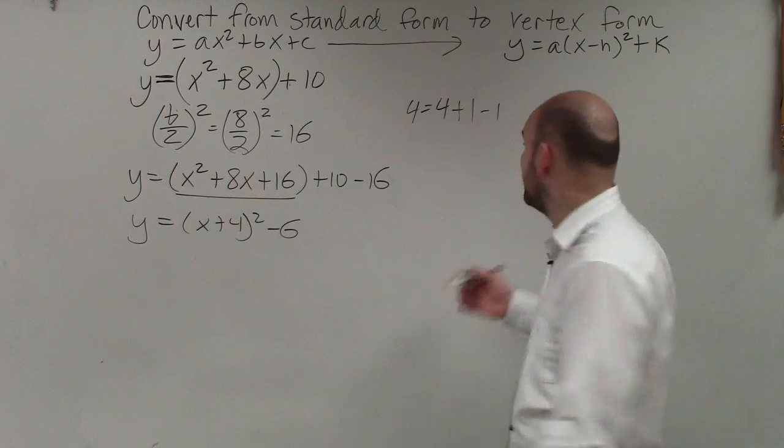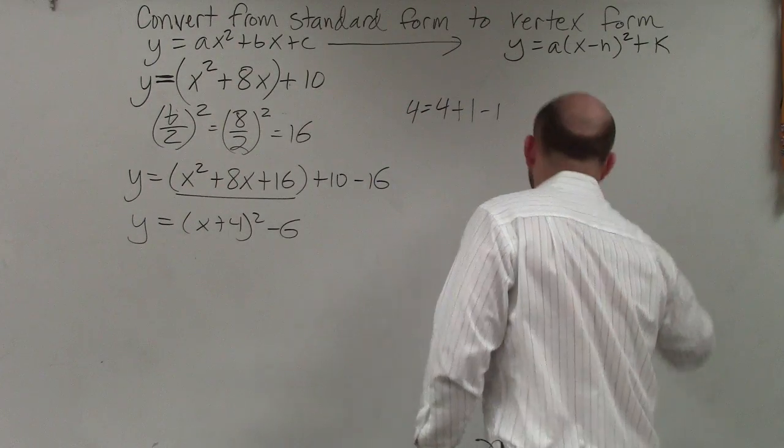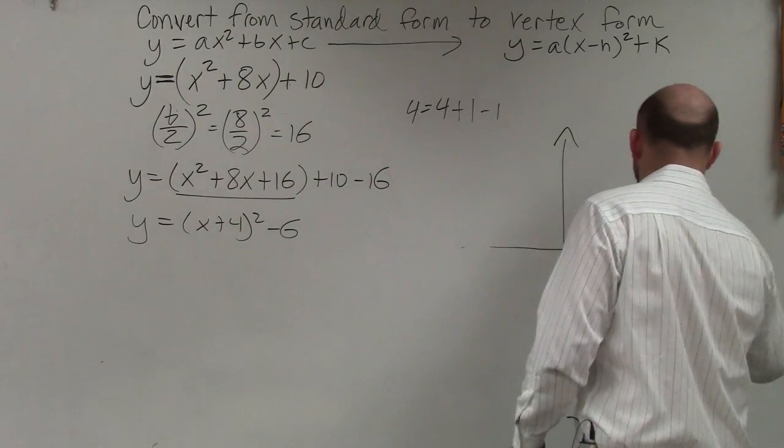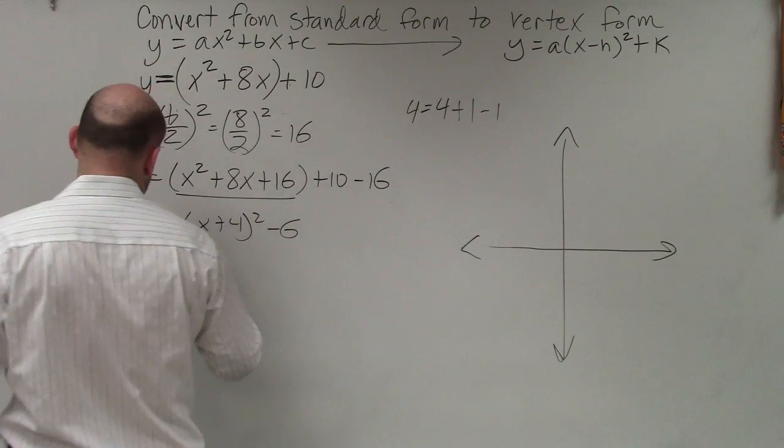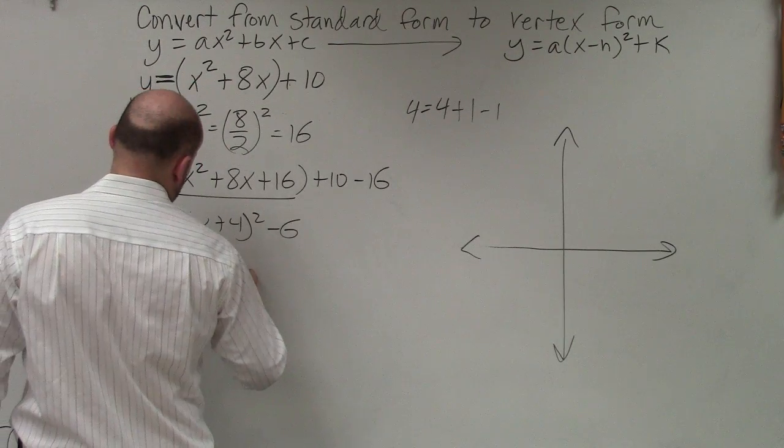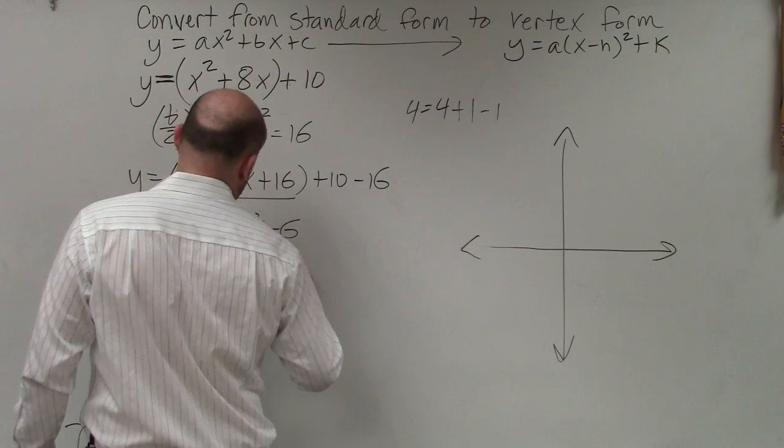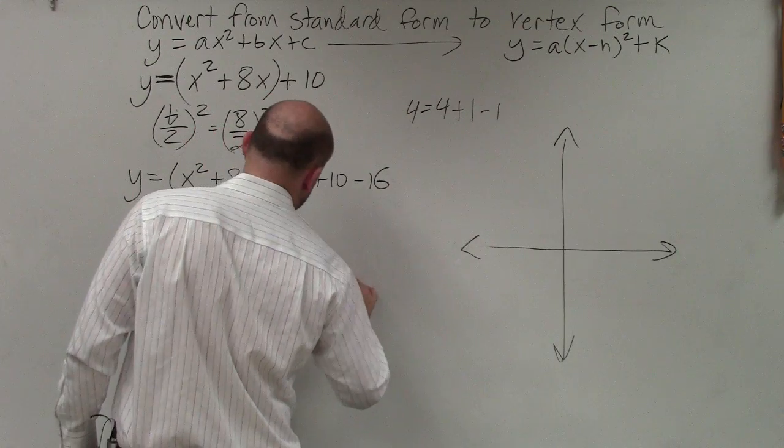Now, if we're going to go ahead and graph this, my vertex is at h comma k, which is negative 4, negative 6.